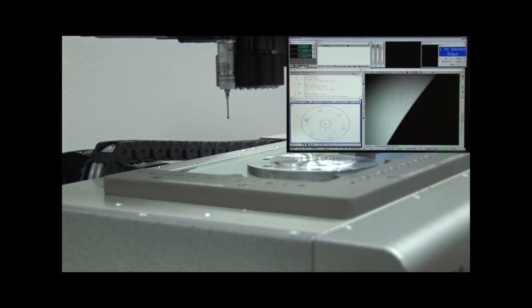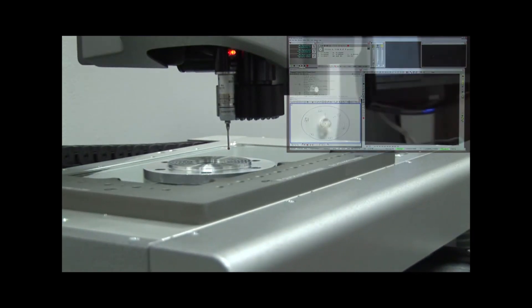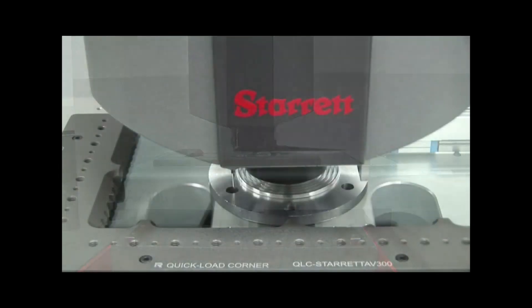The AV300 Plus offers a servo-driven platform of 300mm by 150mm and a range of 200mm on the Z axis.